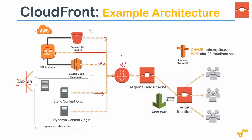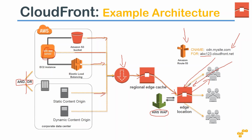The distribution sends data to your regional edge cache, which then distributes it to all edge locations. When a request comes in, it hits the edge location, then goes to the WAF to check whether the user is authorized. If authorized, a response is sent back. Route 53 is the DNS service — as an end user, you type something like 'cdn.mysite.com,' the DNS service translates it to something like 'abc.cloudfront.net,' and your browser redirects to the edge location.